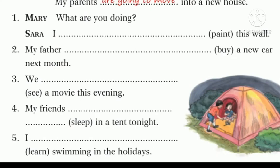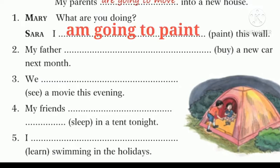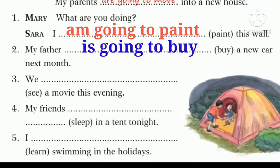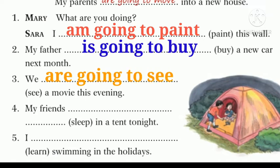Now look at the next one. First one: Mary, what are you doing? Sarah, I am going to paint this wall. So here AM is used with I. My father — father is singular — so my father is going to buy a new car next month. WE shows that it is plural, so: we are going to see a movie this evening.